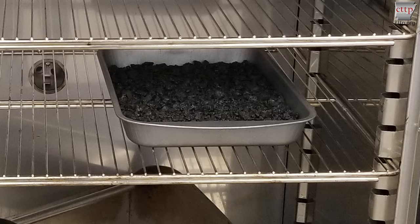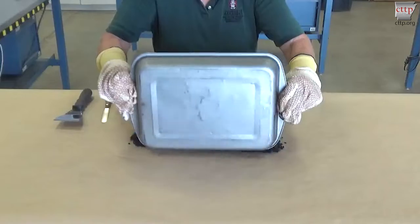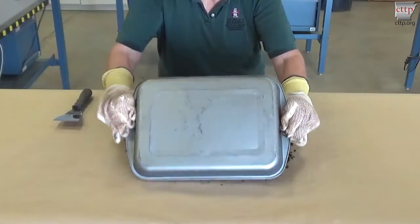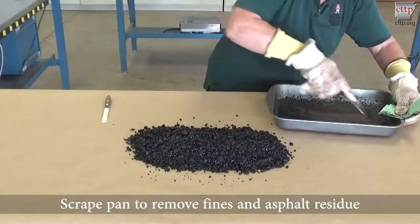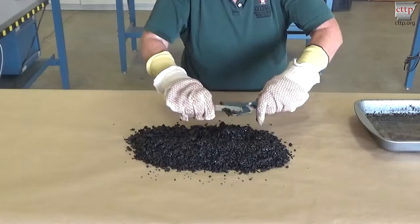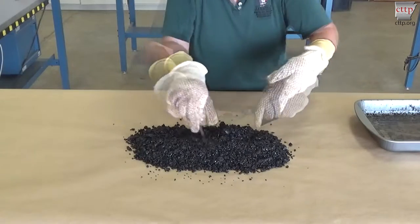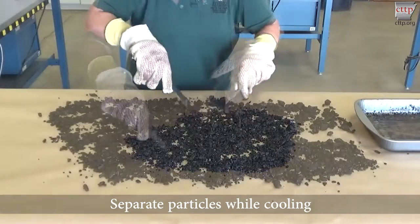The sample should be dry before testing. If conditioning or drying the sample was required, remove the sample from the oven and place it on a non-stick surface. Scrape the pan to remove fines and asphalt residue. Spread out the particles and separate any clumps while cooling.